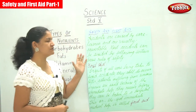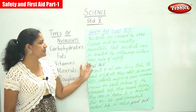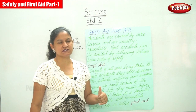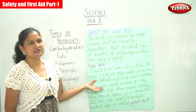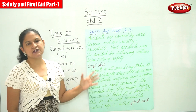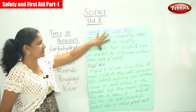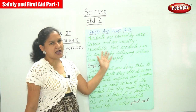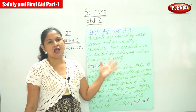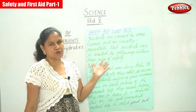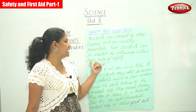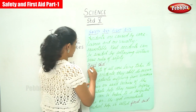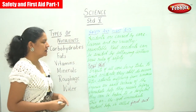Most accidents can be avoided by following certain basic rules of safety. Accidents are mainly caused by carelessness and are usually preventable. In spite of all care being taken to avoid accidents, they still do occur — even when we are extra careful and try to prevent them.